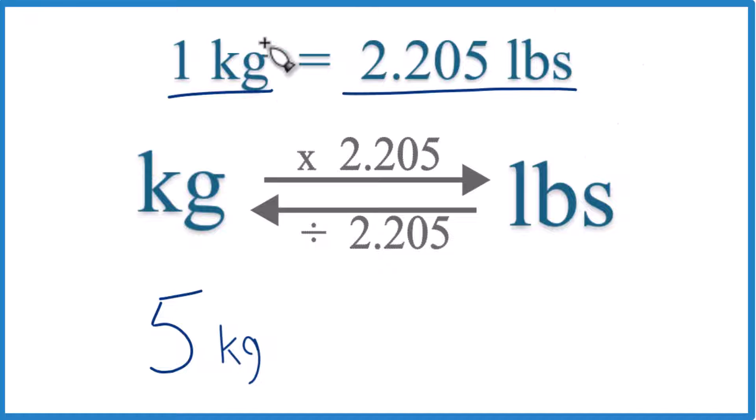So in 1 kilogram, we have 2.205 pounds. That's what we call a conversion factor. And you need to know that when we go from kilograms to pounds or pounds to kilograms.